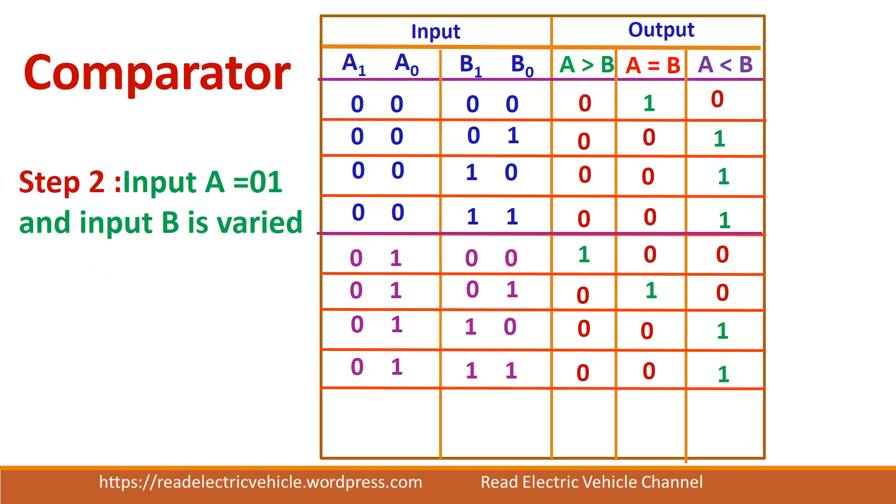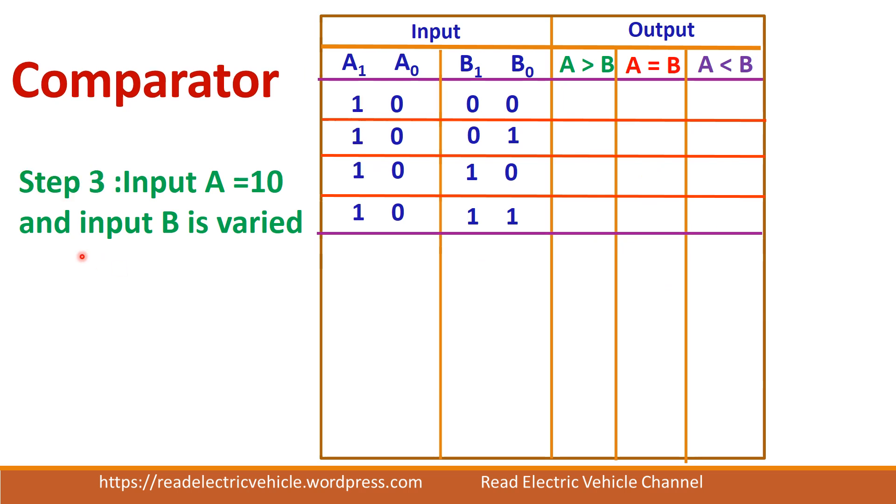So next we will go for third step. So in third step we are making A equal to 1, 0 and do the same comparison. So here it is 1, 0 and 0, 0. So A is greater than B. And in this case also A is greater than B. Now both are equal.